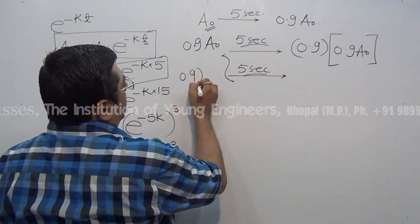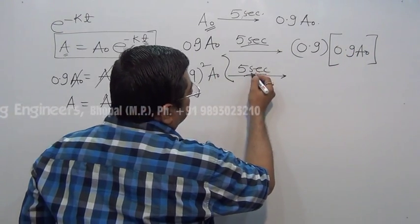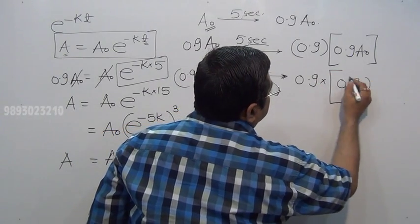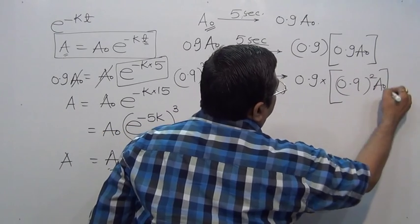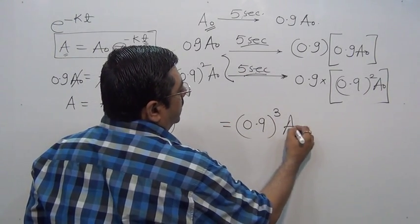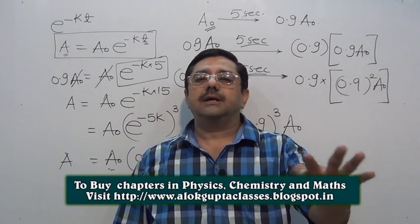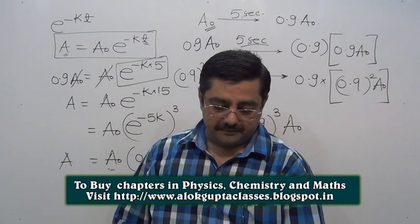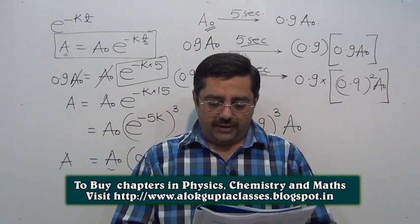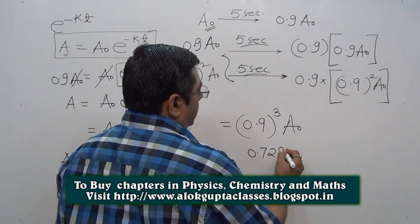Here it is 0.9 × 0.9, which is 0.9²A₀. For another 5 seconds it is 0.9 of 0.9 of 0.9 of A₀. What is your answer? Your answer is simply 0.9³A₀. With this method you can solve all questions.